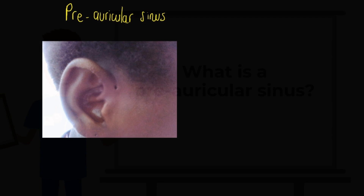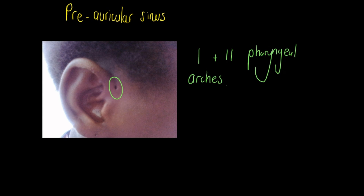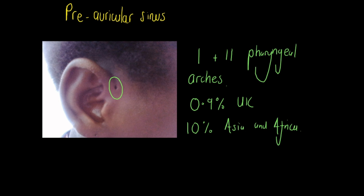A preauricular sinus is a congenital malformation, characterised by a nodule, dent, or dimple adjacent to the outer ear — and here you can see one circled in green. This congenital malformation results from developmental defects of the first and second pharyngeal arches. Reported frequency varies anywhere from 0.9% in countries like the UK up to 10% in places in Asia and Africa. Usually preauricular sinuses are unilateral, meaning found on one side of the ear only, but it is possible to get them bilaterally.